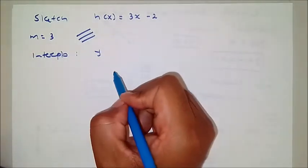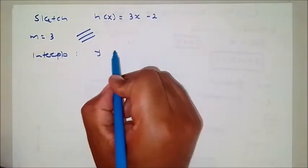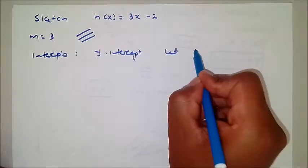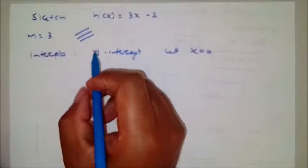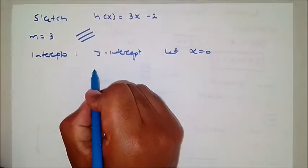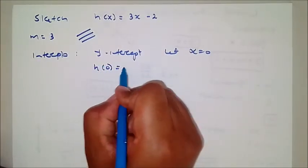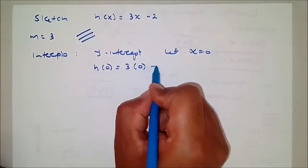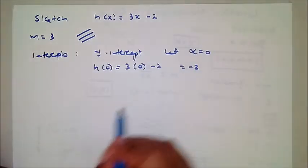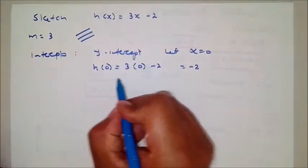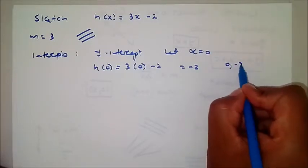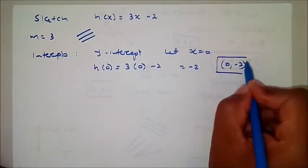For the y-intercept, you let x equal 0. So h(0) = 3 times 0 minus 2, which equals negative 2. So your y-intercept is at (0, -2).